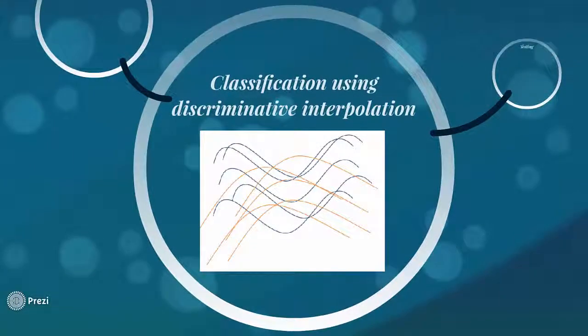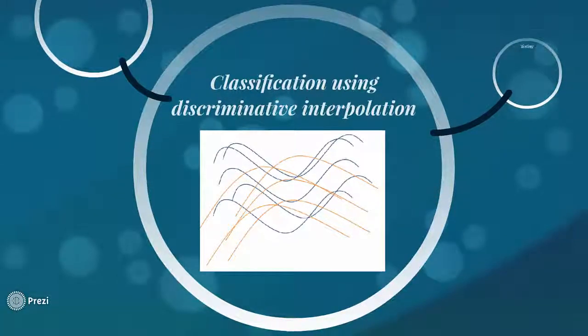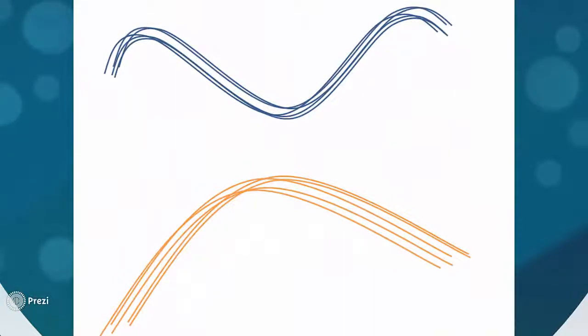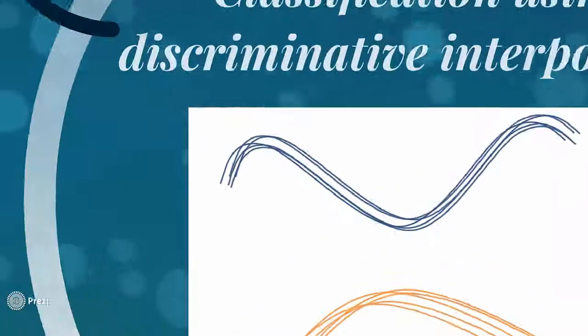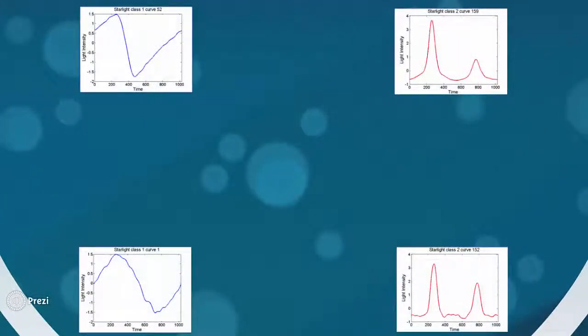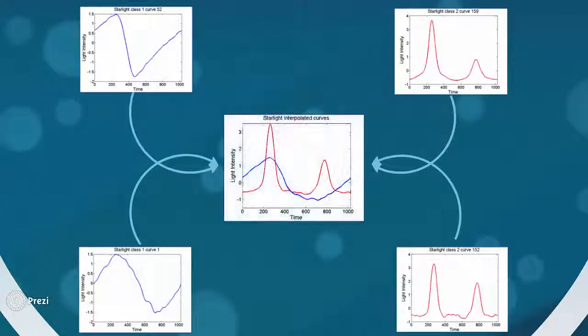The second method of functional data classification is discriminative interpolation. The basic idea is there are two sets of curves, and the curves of each class move closer to each other by interpolation. In training, there are two curves from each class that move towards each other to produce four interpolated curves.